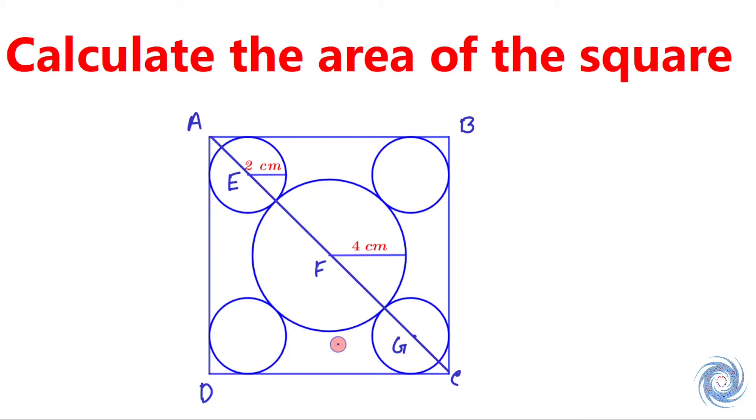According to the figure, the diagonal AC passes through the points E, F, G. Also, let us take this point of intersection as H, this one as I, this one as J, and this one as K. If we can calculate the length of AC, then we will get the area of the square.